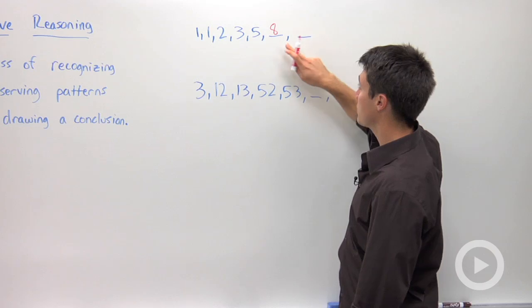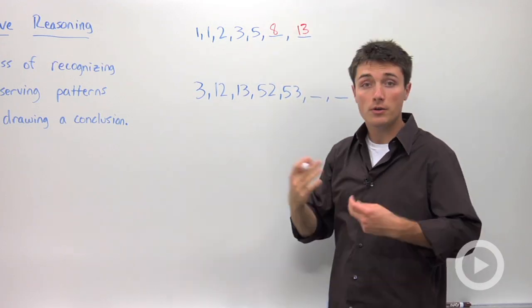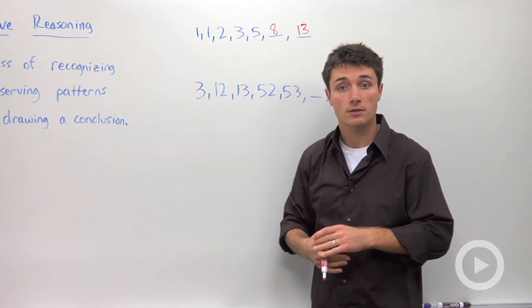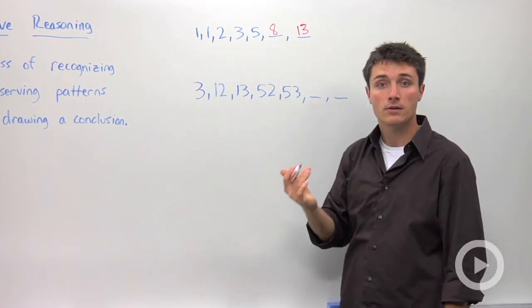So the next number is going to be the sum of eight and five, so that's going to be 13. So all you did there was use inductive reasoning. You saw a pattern and you used it to conclude that the next two numbers are eight and 13.